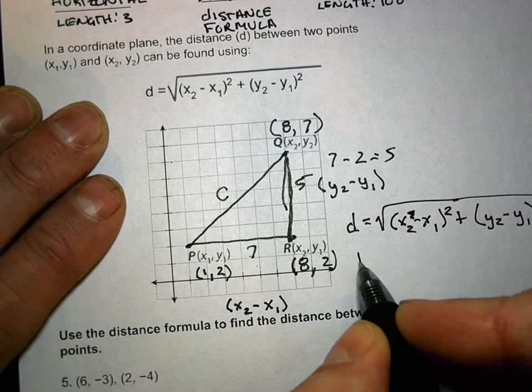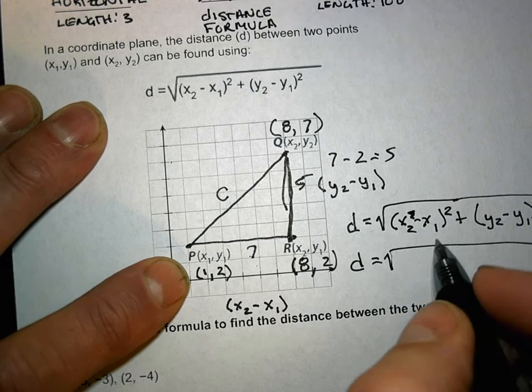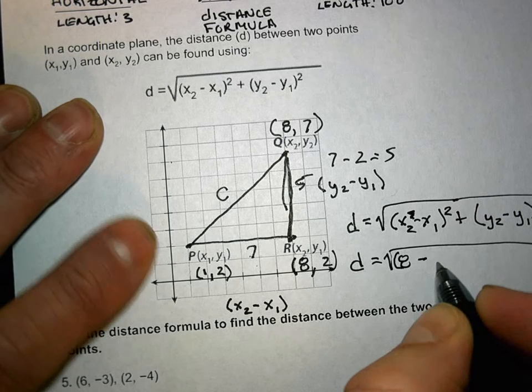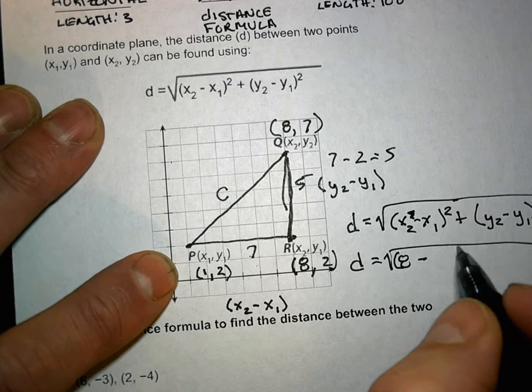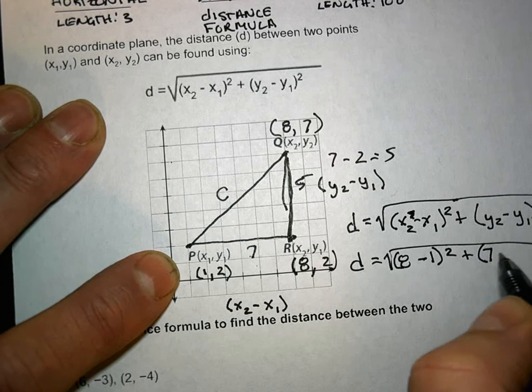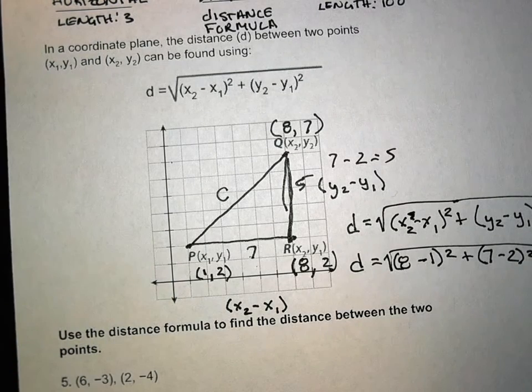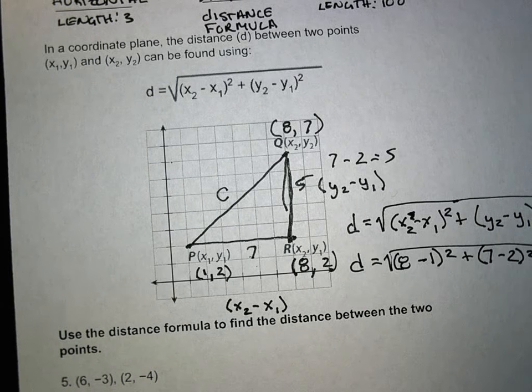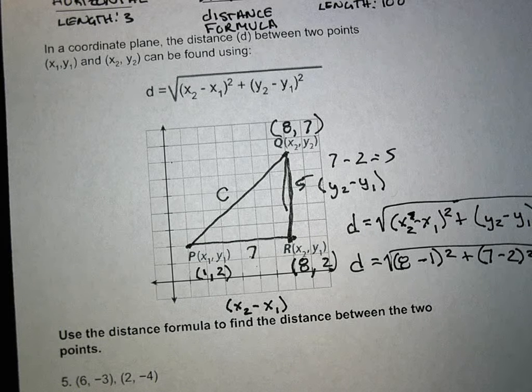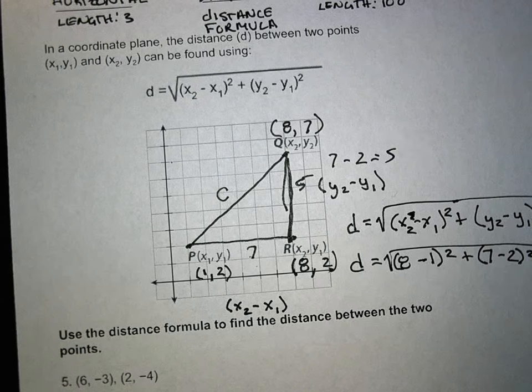So given what we had, that would be d is the square root of x sub 2 is 8 minus x sub 1, which is 1 squared, plus y sub 2, which is 7, minus y sub 1, which is 2 squared. Do it on your calculators.